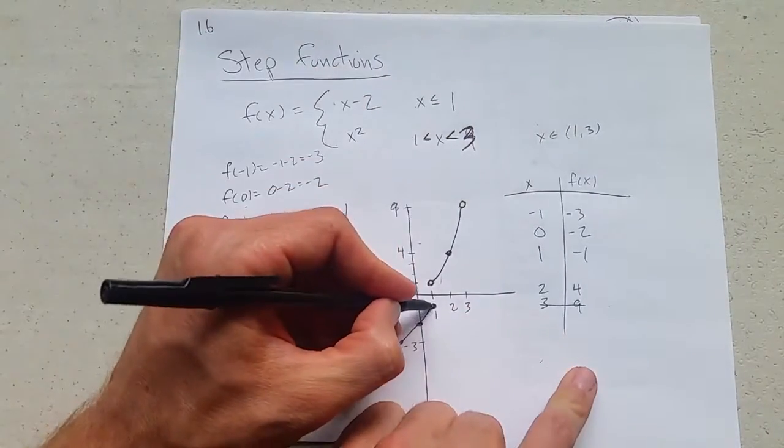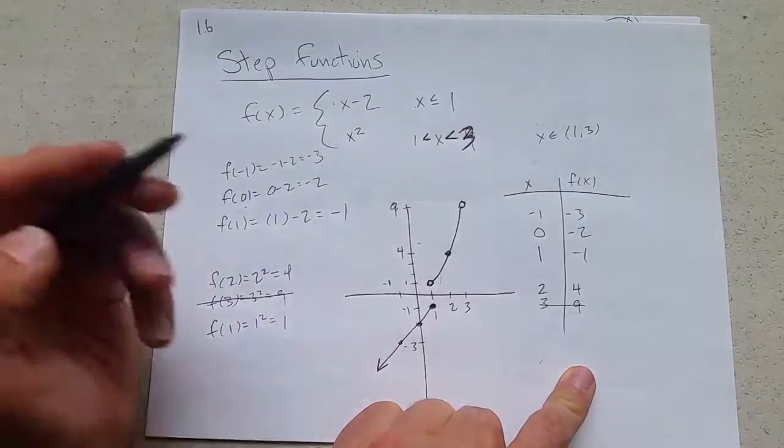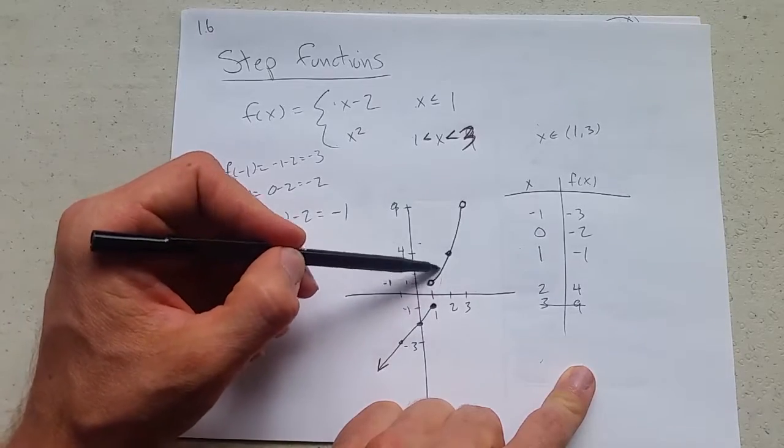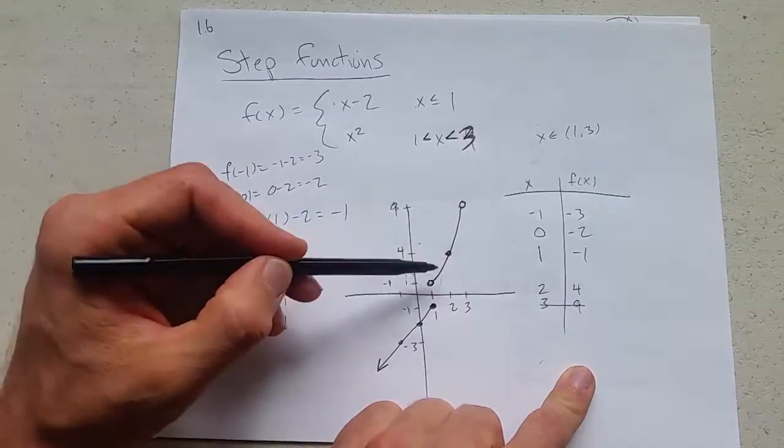What happens at 1? Our y value is negative 1. So at 1, our y value is negative 1. If we go just to the right of 1, we'll have a y value up on this curve.